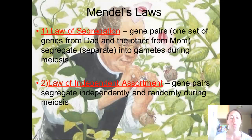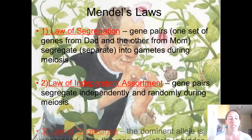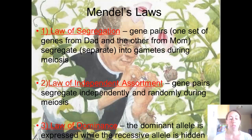Number two, the law of independent assortment: gene pairs segregate independently and randomly during meiosis. Number three, the law of dominance: the dominant allele is expressed while the recessive allele is hidden.